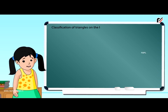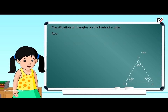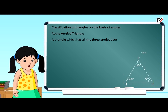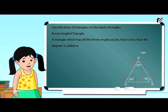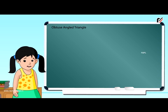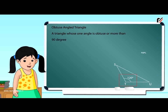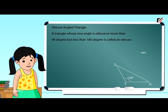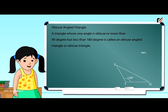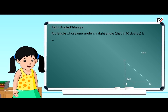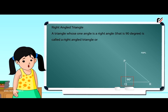Classification of triangles on the basis of angles. Acute angled triangle: A triangle which has all three angles acute, that is less than 90 degrees, is called an acute angled triangle or acute triangle. Obtuse angled triangle: A triangle whose one angle is obtuse, or more than 90 degrees but less than 180 degrees, is called an obtuse angled triangle. Right angled triangle: A triangle whose one angle is a right angle, i.e. 90 degrees, is called a right angled triangle.